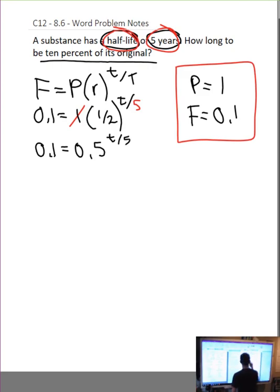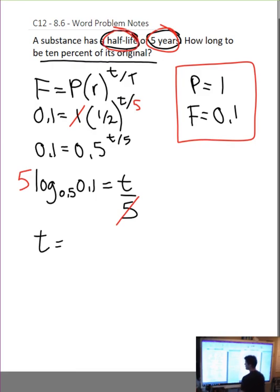So, 0.1 equals 0.5 to the t over 5. Now, I can change the log form. Log base 0.5 of 0.1 is equal to t over 5. And I can simply times both sides by 5. Therefore, t is equal to 16.61 years.